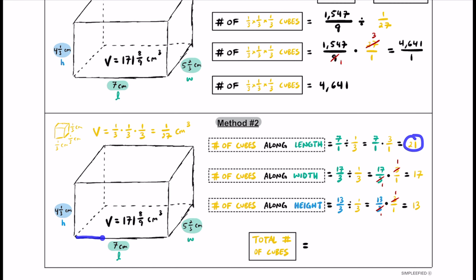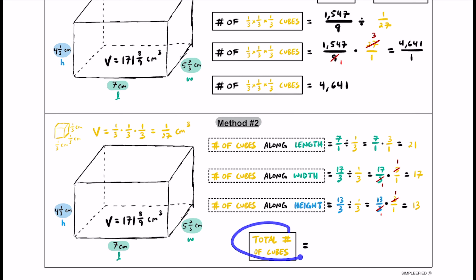So we can fit 21 cubes along the length, 17 along the width, and 13 layers stacked up the height. Multiplying 21 × 17 gives the number on the bottom layer, and then multiplying by 13 layers gives the total. That comes out to 4,641 — exactly matching our Method 1 result.